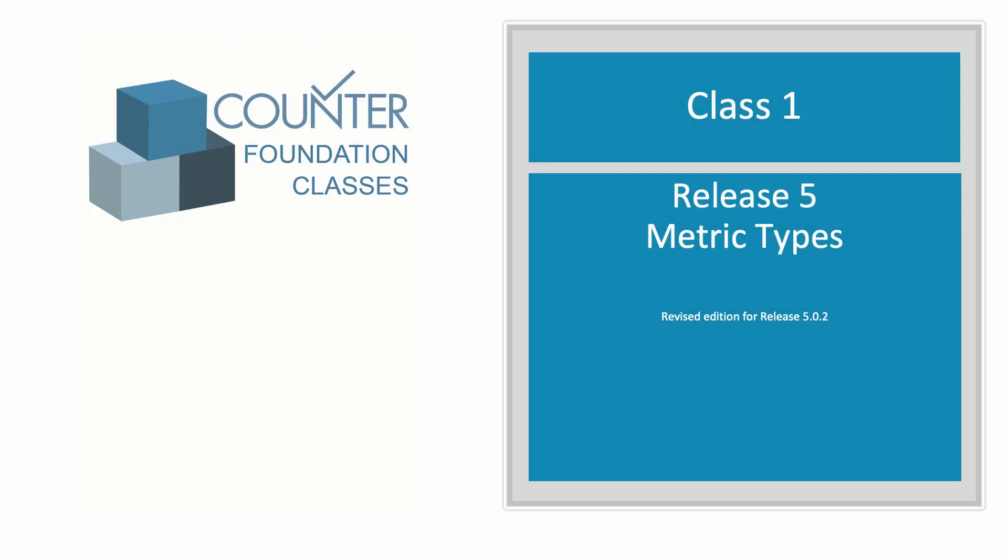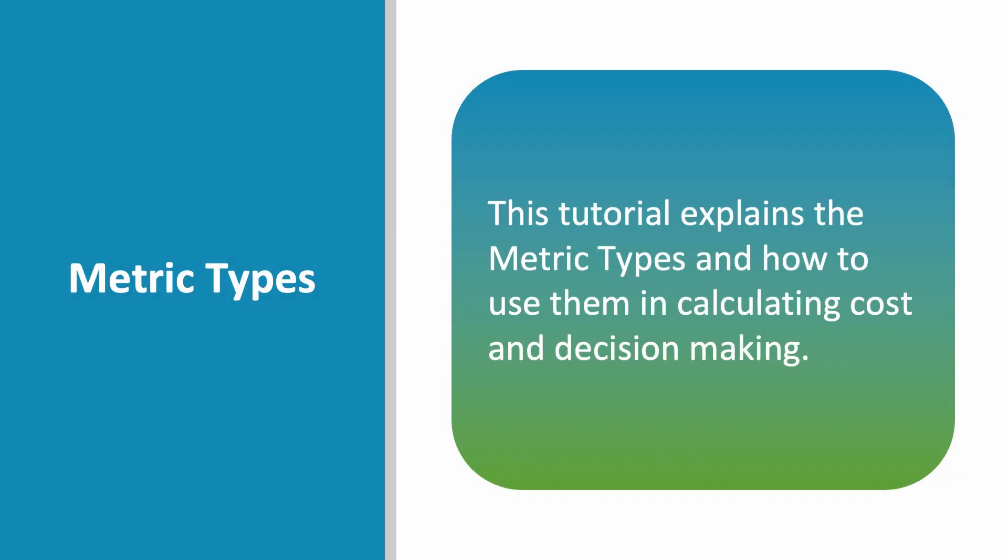Welcome to this first tutorial in the Counter Foundation class series. This is a revised recording to reflect some minor changes in Release 5.0.2 of the Counter Code of Practice Release 5, published in 2021. This tutorial explains the Release 5 metric types and how to use them in calculating cost and decision making.